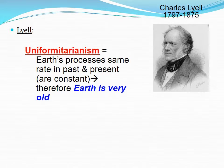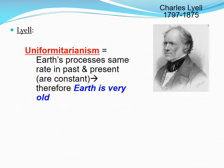Charles Lyell, another geologist, put forward uniformitarianism — the idea that earth processes occur at the same rate now as they did in the past. Therefore, if you know how quickly those processes are occurring now, you can use mathematical models to backdate and conclude that the earth must be very old.